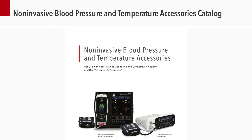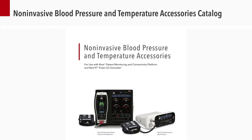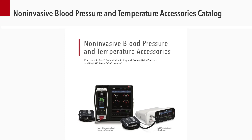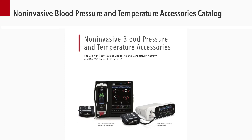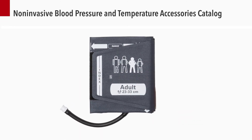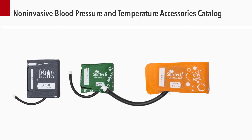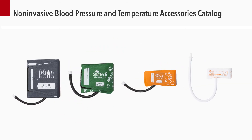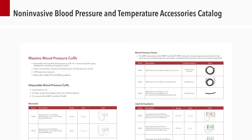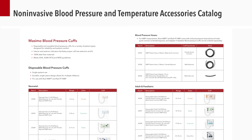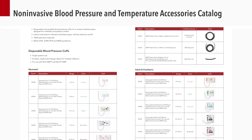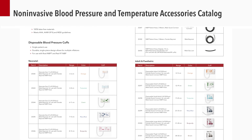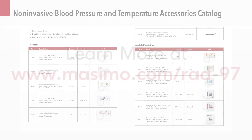RAD 97 NIBP is compatible with a variety of disposable and reusable cuffs for adult, pediatric, infant, and neonatal patients. For a full list of compatible cuffs, hoses, and accessories, refer to the non-invasive blood pressure and temperature accessories catalog.